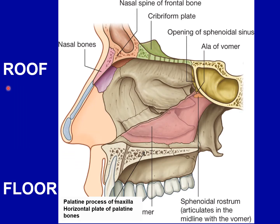The roof of the nasal cavity is narrow and is formed anteriorly by the nasal bone and the frontal bone beneath the bridge of the nose, in the middle by the cribriform plate of the ethmoid bone located beneath the anterior cranial fossa, and posteriorly by the downward sloping body of the sphenoid bone.